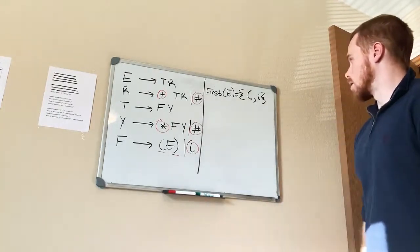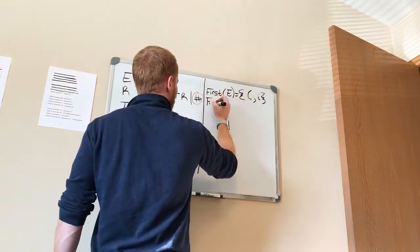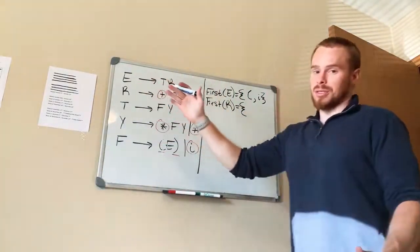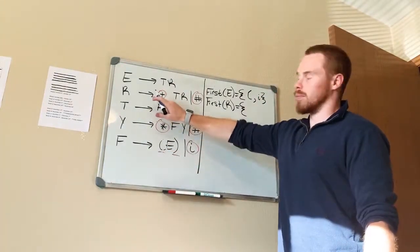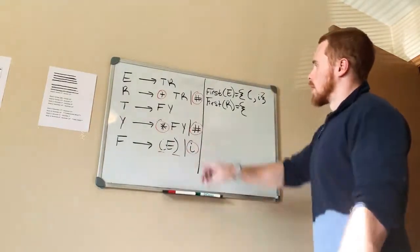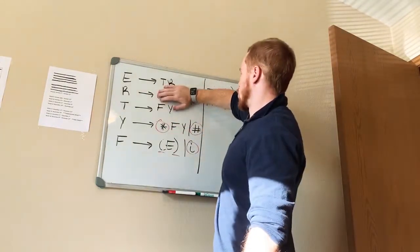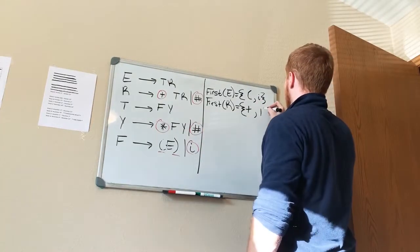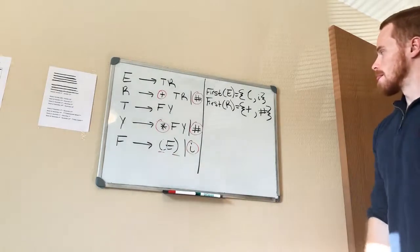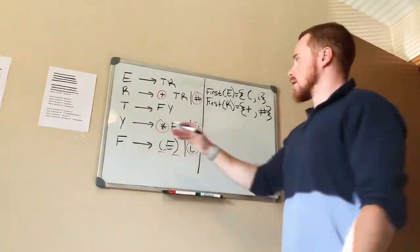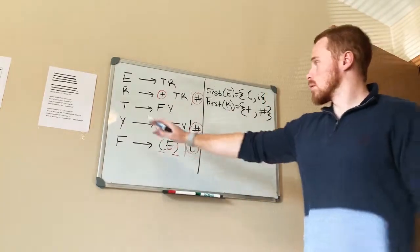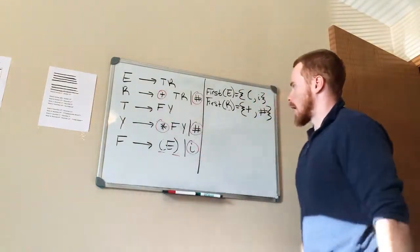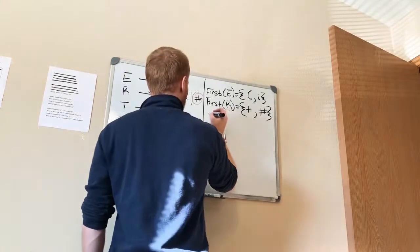Now let's do First(R). R is pretty easy — looking at the rule for R, you get a terminal symbol right away: the plus sign. But you also have an 'or', meaning you can either grab the plus sign or you can grab the number symbol. Remember, the idea is: starting from this grammar rule, what terminal symbol can you generate first? So First(R) contains plus and the number symbol.